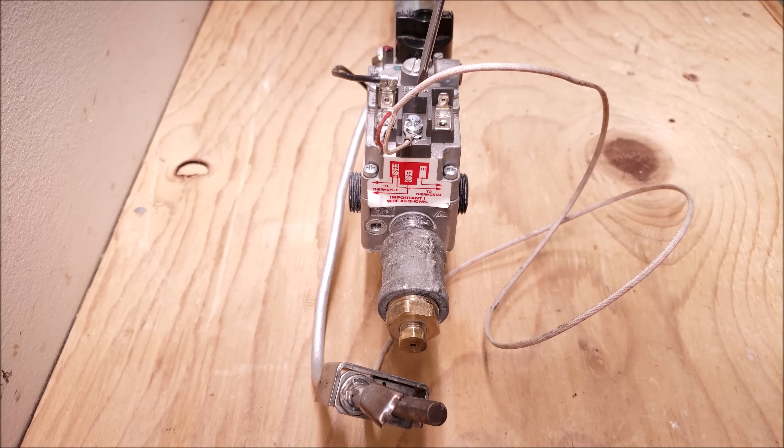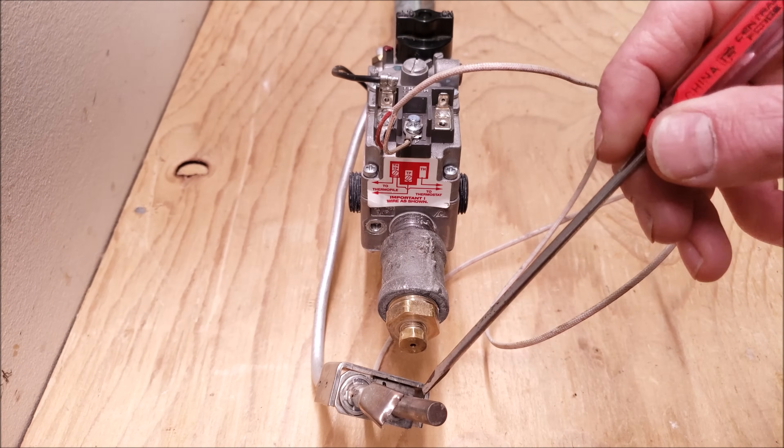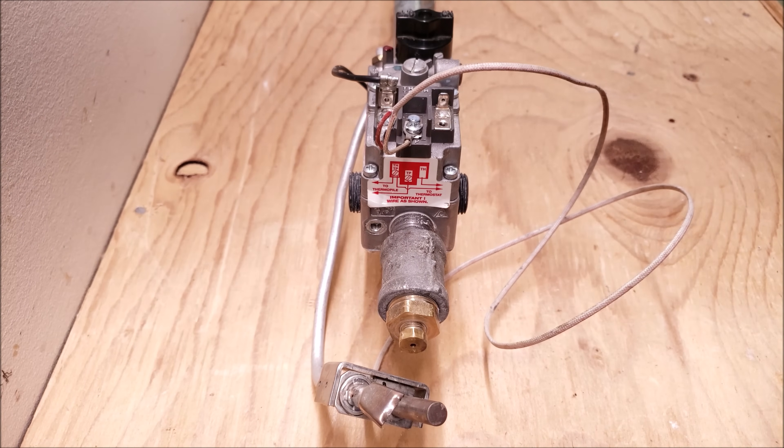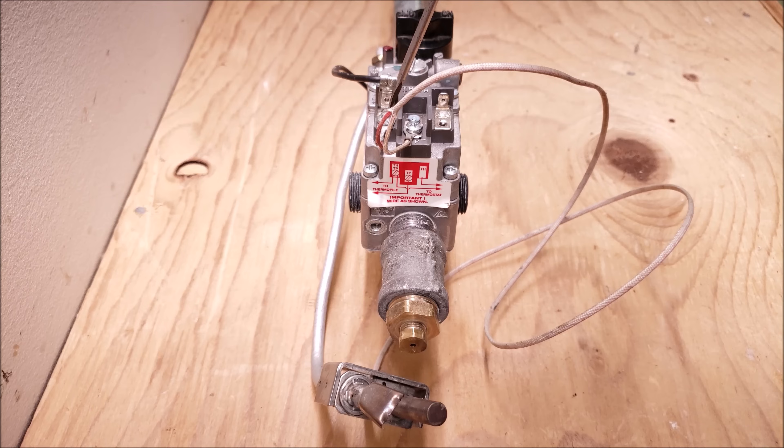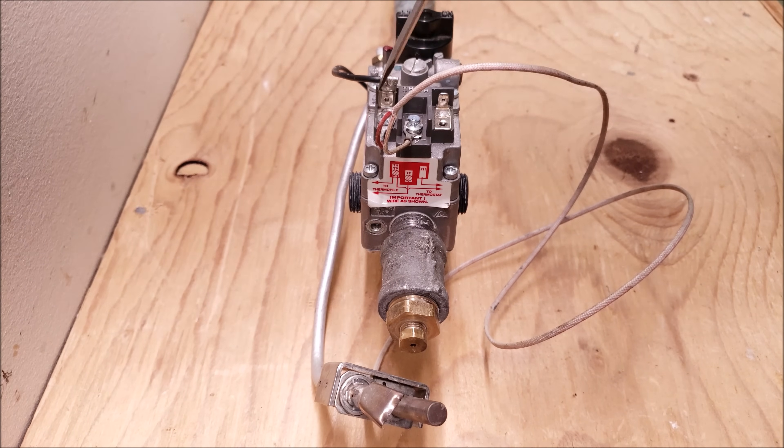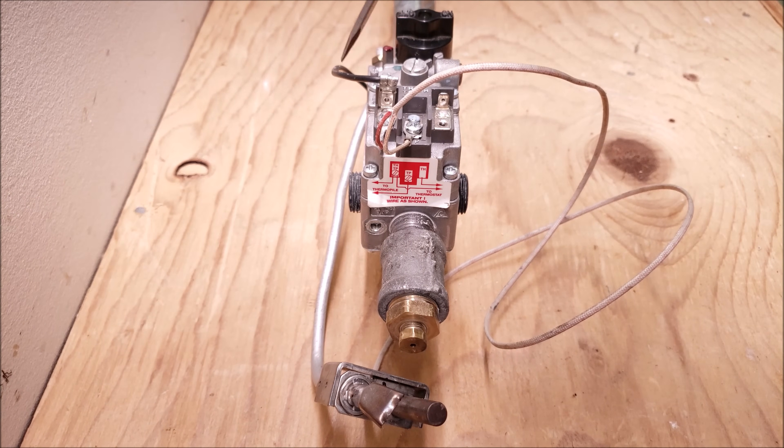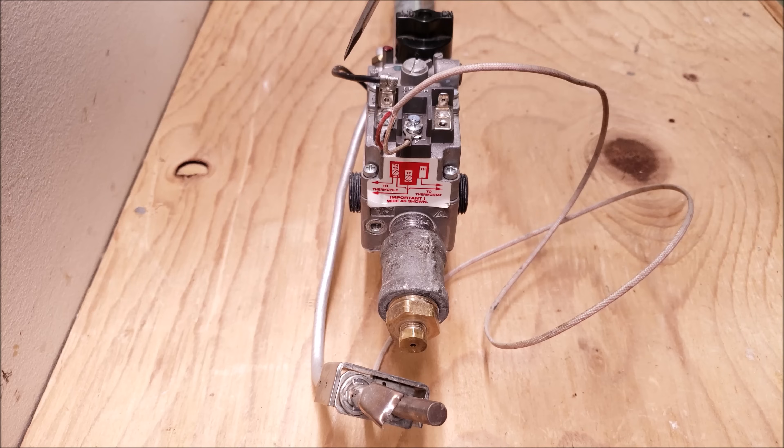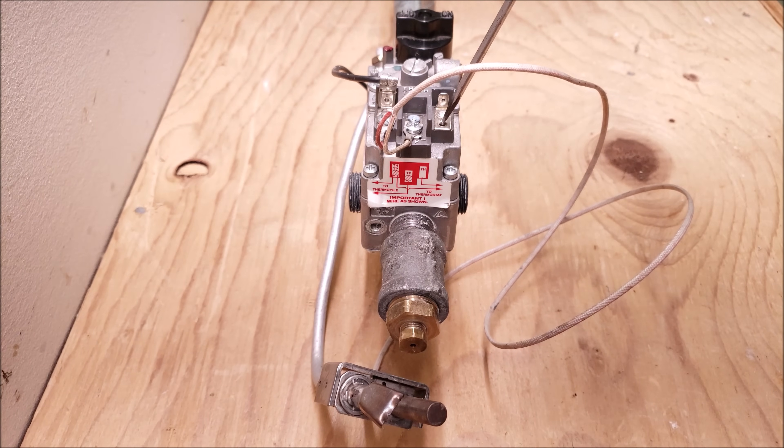So we're powering the solenoid valve anytime we have the flame lit. The main burner is powered anytime we use this as a junction point. We go from here through a thermostat which is normally open and then it closes on a call for heat and then ends up powering the TH.